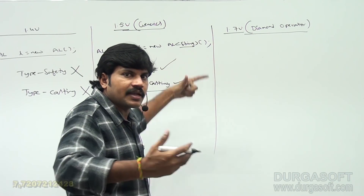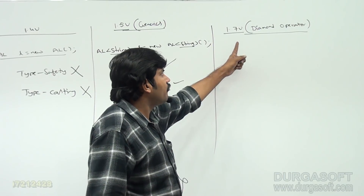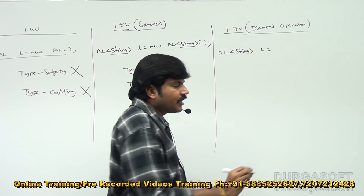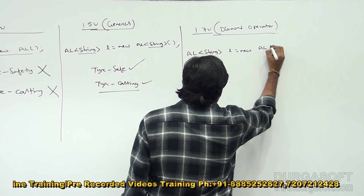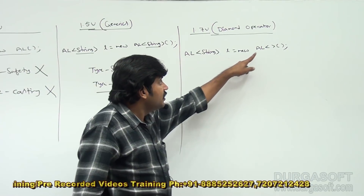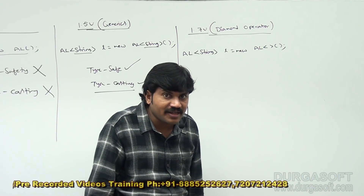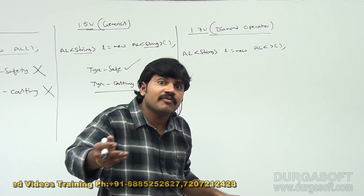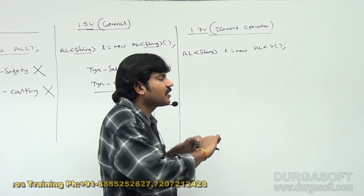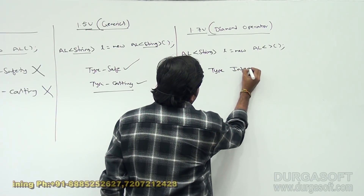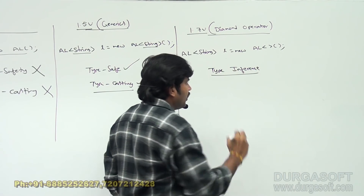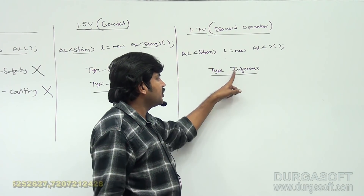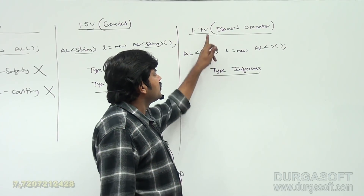From Java 1.7 onwards, you can write: ArrayList<String> l = new ArrayList<>(). The type parameter the second time is not required to be specified. Based on the context, the compiler will consider the type automatically. This is called type inference.